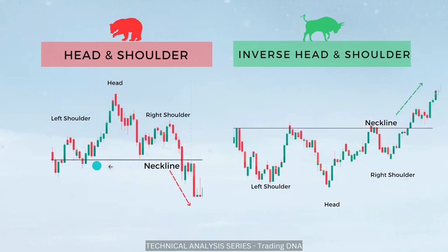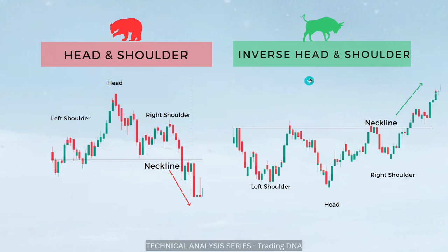Let's see this with an example. The stock reaches the left shoulder, then rises to the head, comes down to the neckline, and forms the right shoulder; once this neckline is broken a trader can go for short selling. In inverse head and shoulder, the left shoulder forms, the stock takes resistance and forms the head, then the right shoulder forms; once this neckline is broken, you can go long so that the price can go higher. This is how you should trade head and shoulder and inverse head and shoulder.